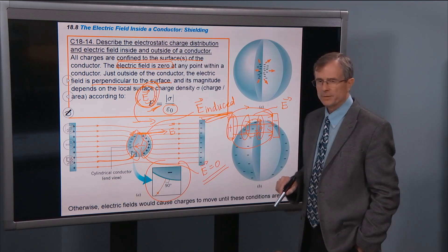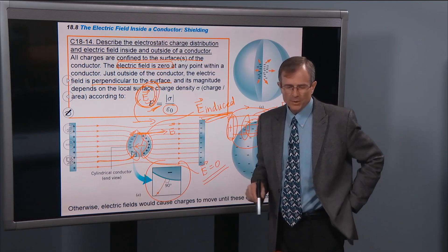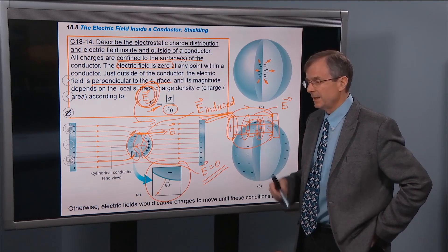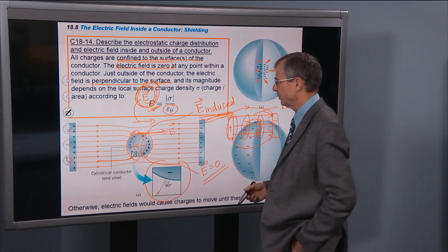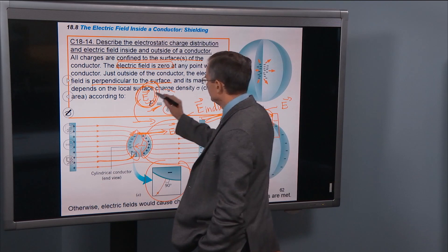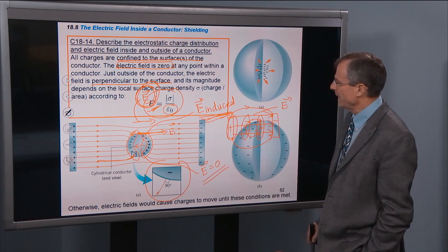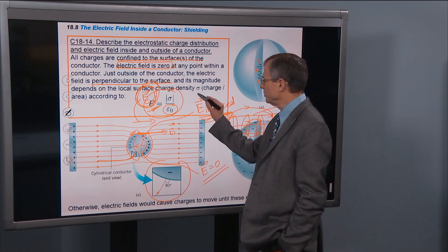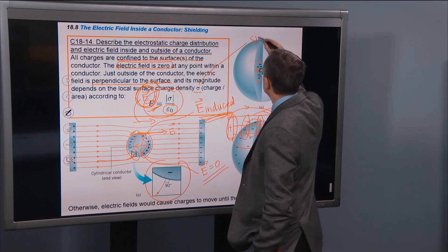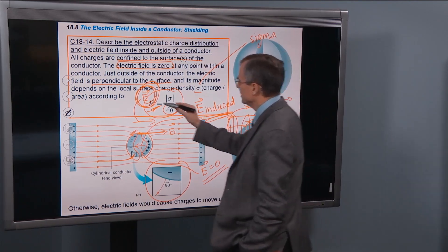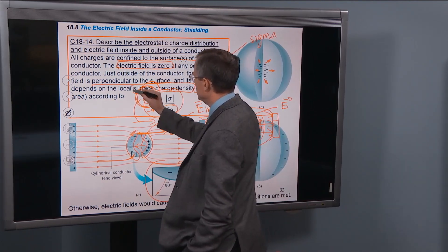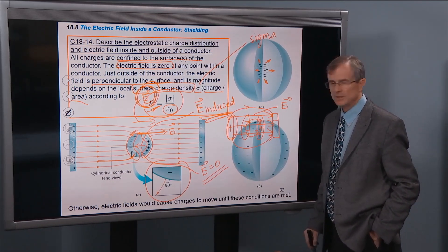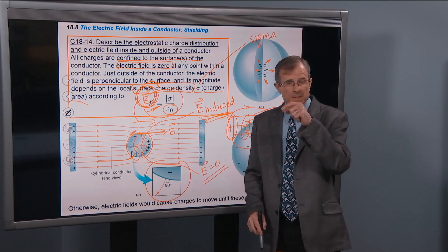The magnitude of the field just outside the conductor depends on the local surface charge density. This requires Gauss's law to derive, and I won't expect you to derive it, but you do need to know it. The local electric field E has magnitude equal to the local surface charge density sigma, |σ|/ε₀. Sigma is a Greek letter denoting surface charge density — it is a charge per unit area.